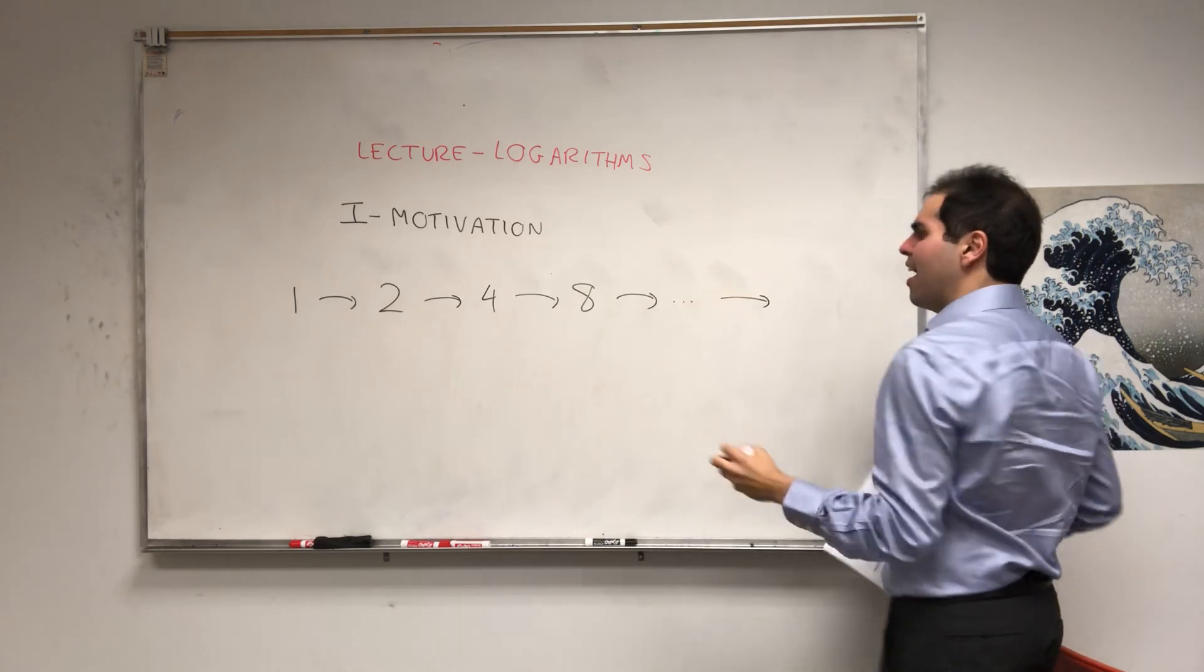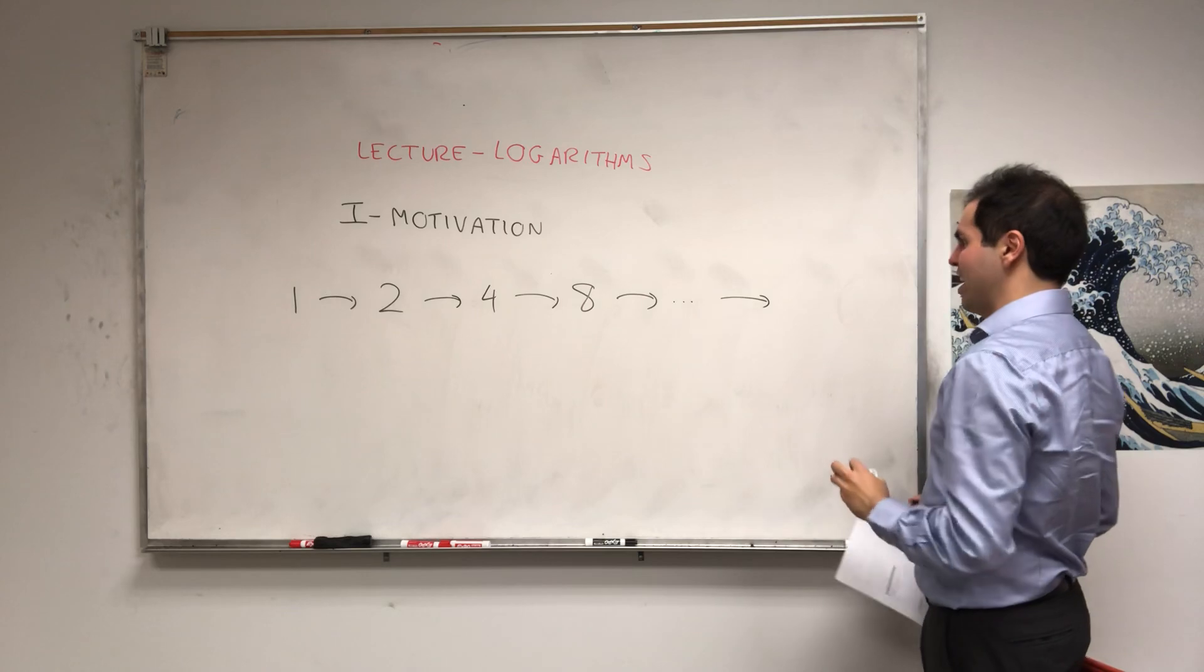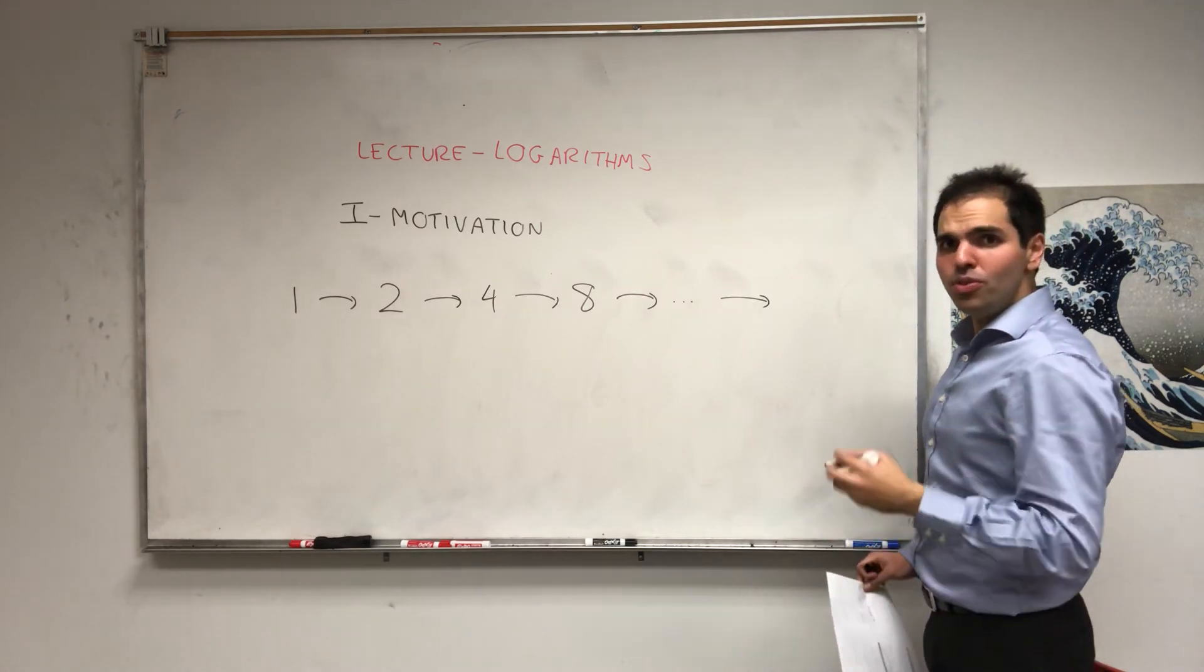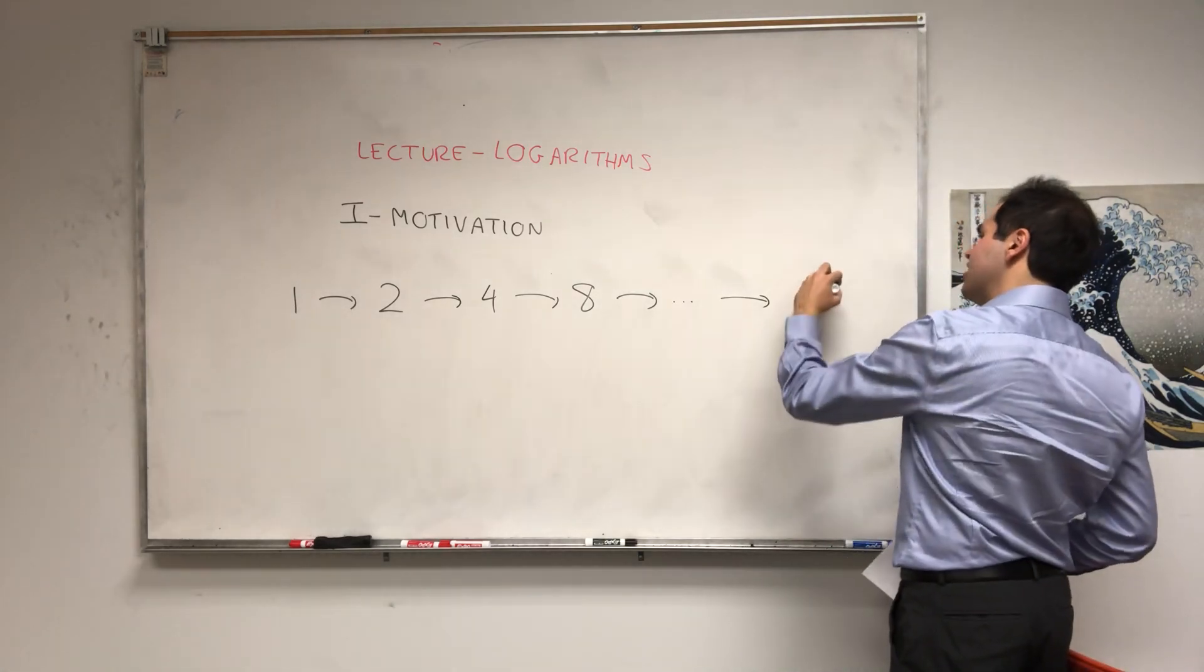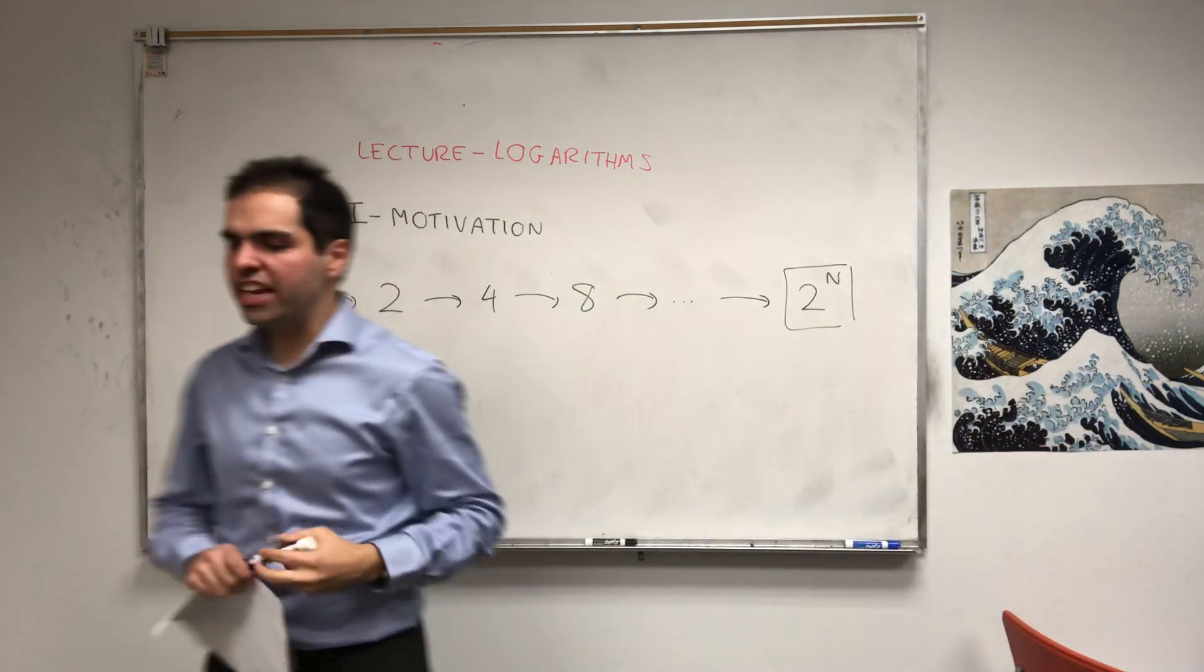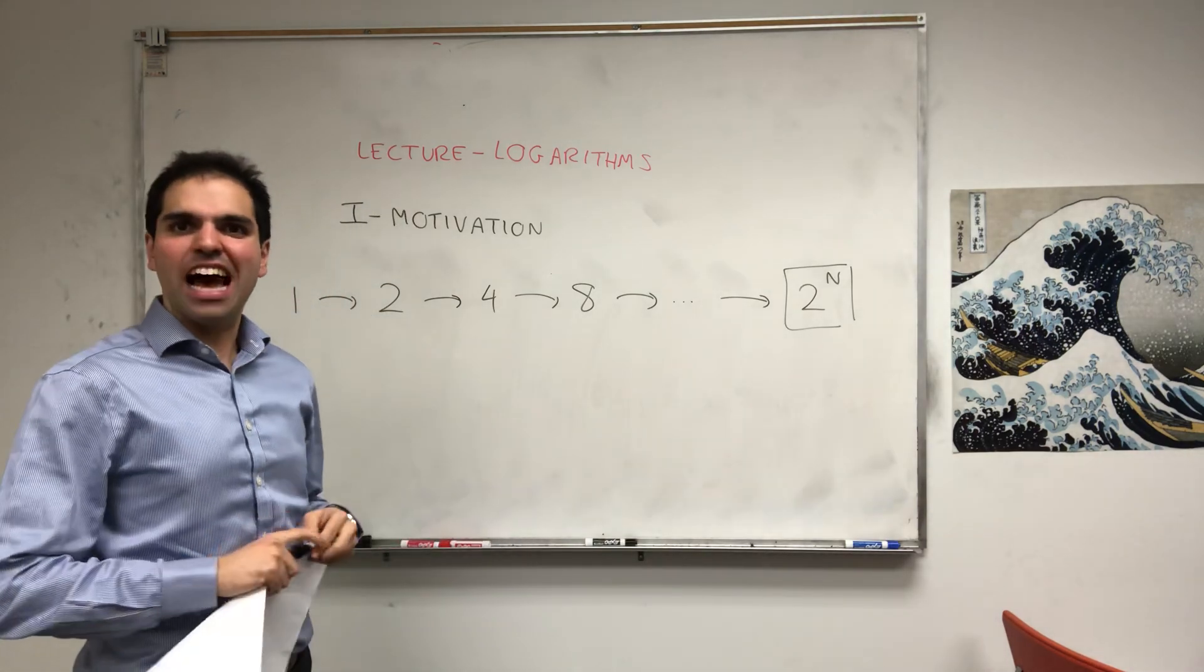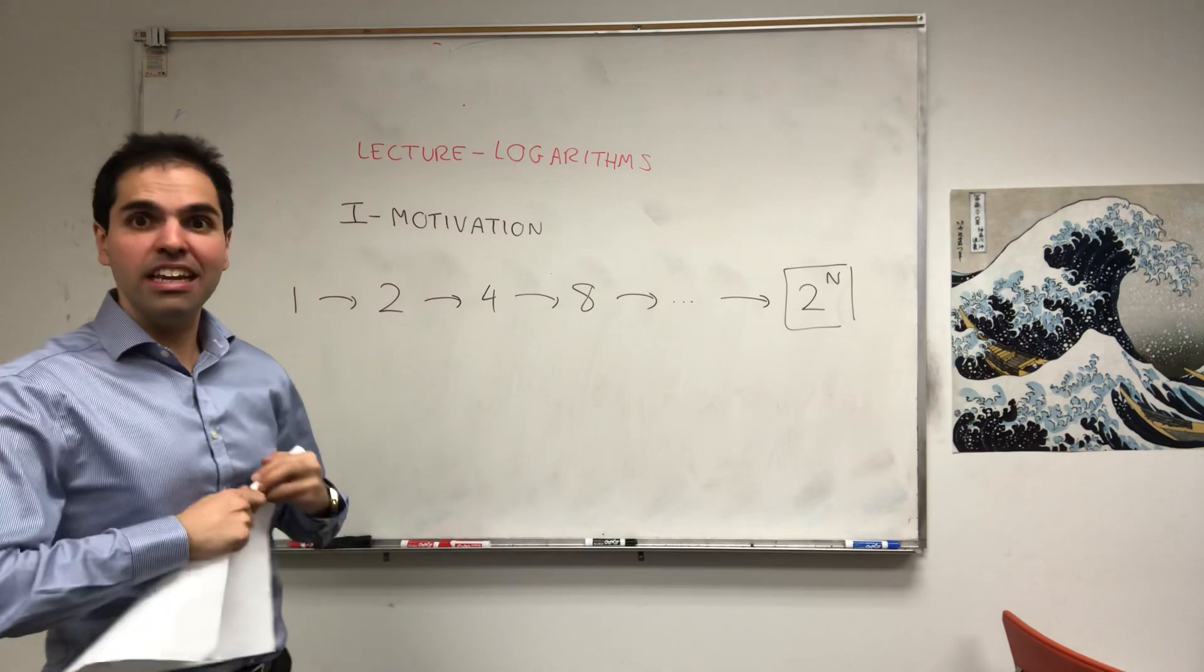First, any guesses how much money do you have after n rounds? Two to the n. Very good. In other words, after n rounds, you get 2^n dollars. So, the question of how much money you get after n rounds is completely settled.